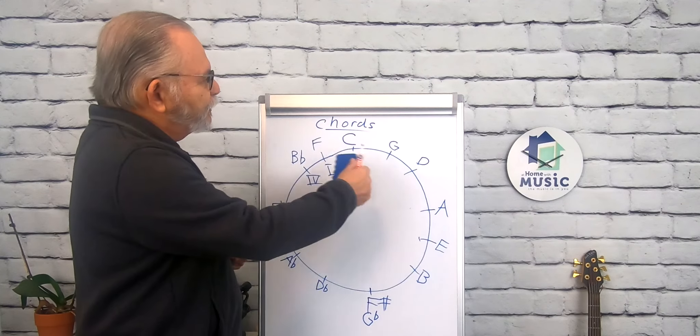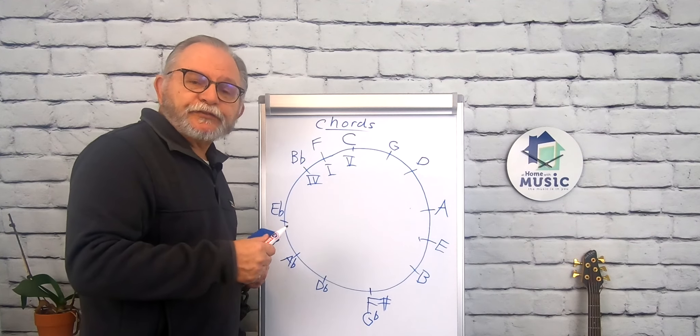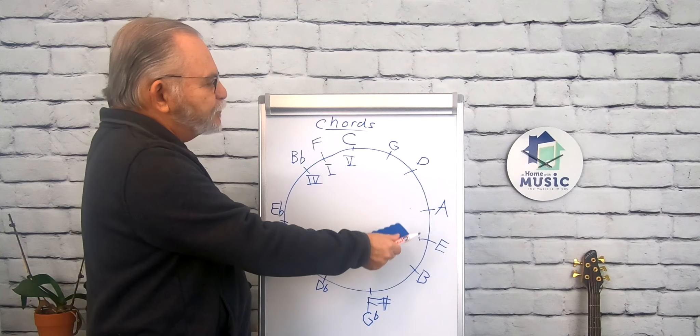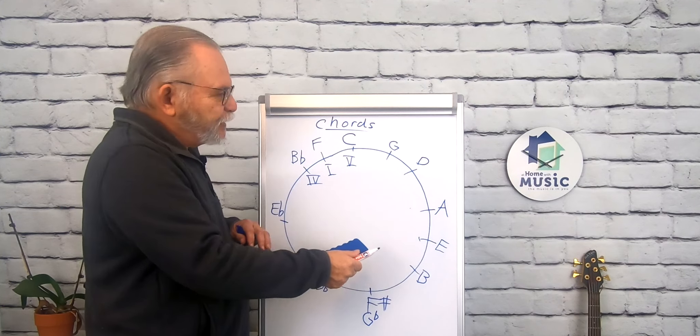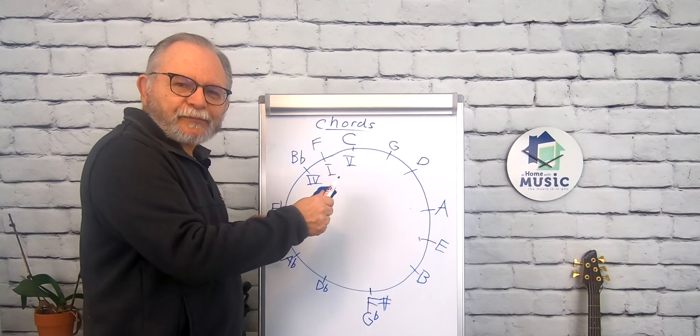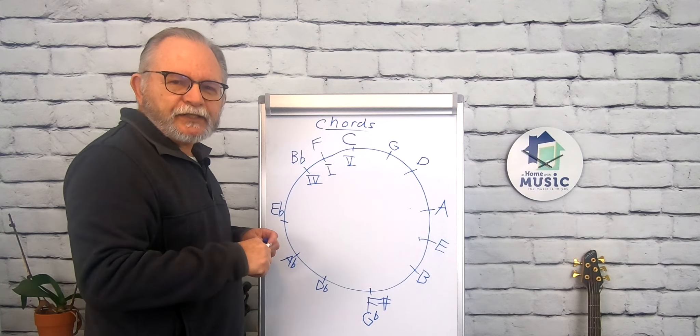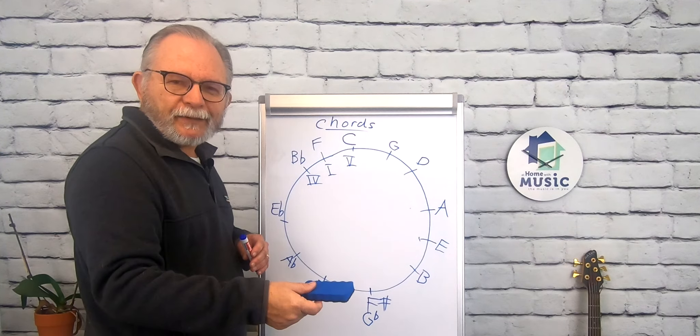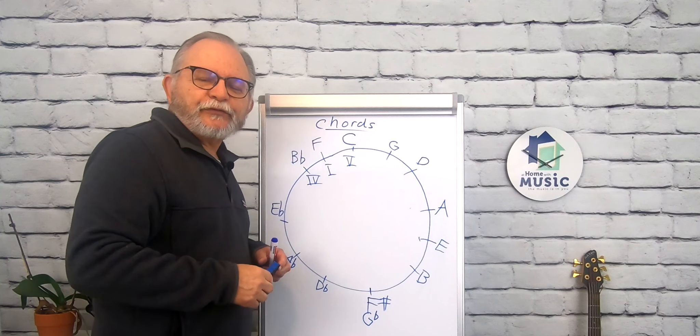So there's our next lesson in the circle of fifths. In the next video we're going to cover how this relates to key signatures. And you'll see that this is an easy way for you to help memorize how many sharps and flats are in each key signature. There's more than one way to do it, but the circle of fifths gives you another way. And I think you'll find that very interesting.